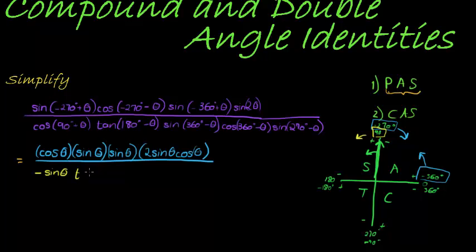Tan of 180 minus. Here's 180, minus is in the negative direction or clockwise, which means I'm in the second quadrant where tan is negative tan of θ.